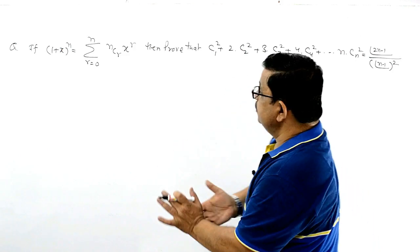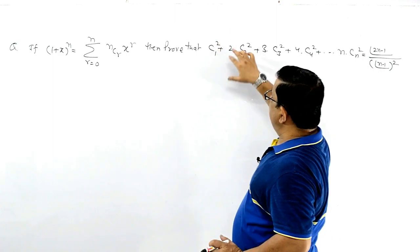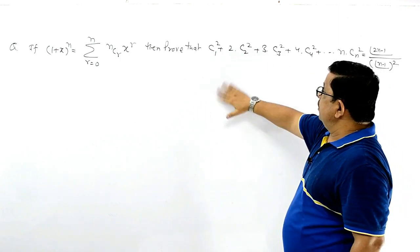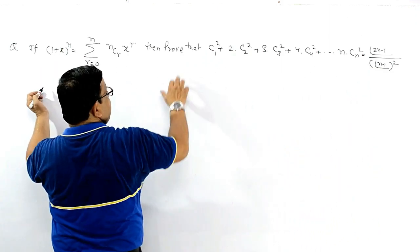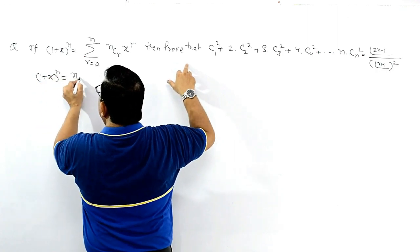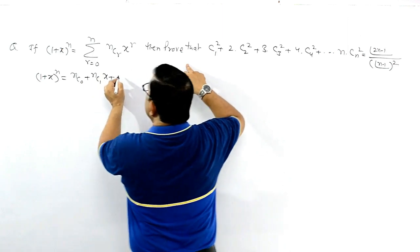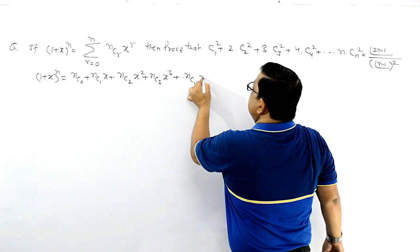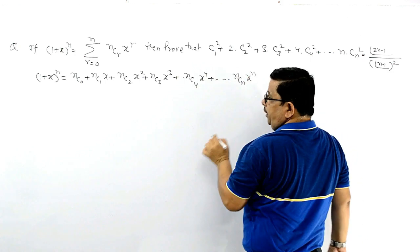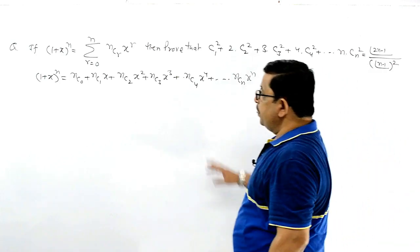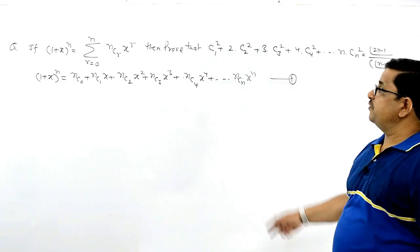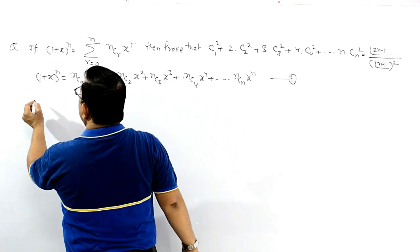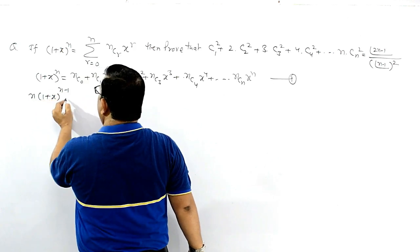I am going to take a different approach. We have (1+x)ⁿ = 1 + nc₁x + nc₂x² + nc₃x³ + nc₄x⁴ + ... + ncₙxⁿ. Now differentiating this, we get n(1+x)^(n-1) on the left side.